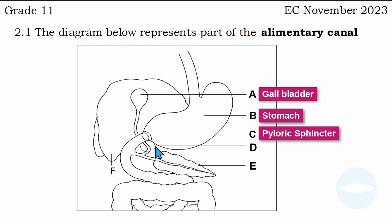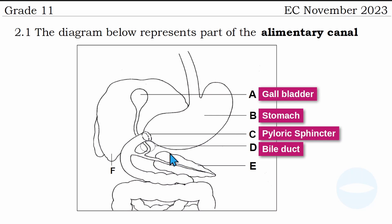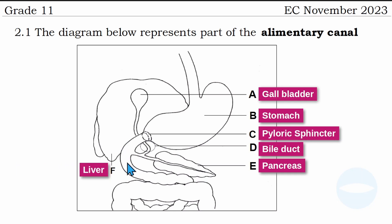And then number D — this portion with the circle here — is a bile duct. This duct transports bile from the gallbladder to the small intestine, so we call it a bile duct. And then number E, this leaf-like part, is called the pancreas. We know the pancreas falls under both endocrine and exocrine glands. And then number F is the liver. So these are the labels needed in this question.